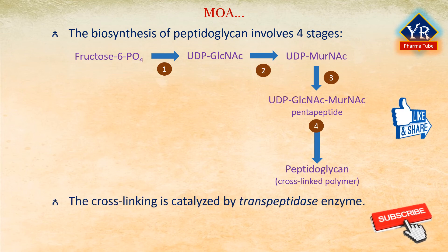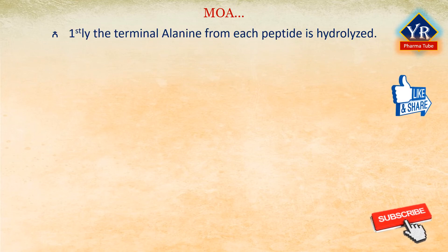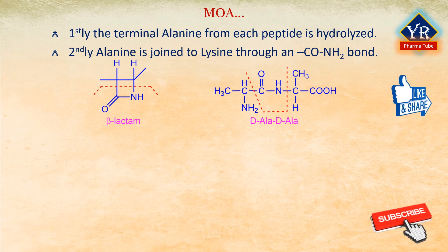The cross-linking is catalyzed by the enzyme transpeptidase. In the aforesaid biosynthesis of peptidoglycan, firstly the terminal alanine from each peptide is hydrolyzed, and secondly one alanine is joined to lysine through an amide bond. Cephalosporin binds at the active site of the transpeptidase enzyme that cross-links the peptidoglycan strands. It does this by mimicking the D-alanyl-D-alanine residues that would normally bind to the site.